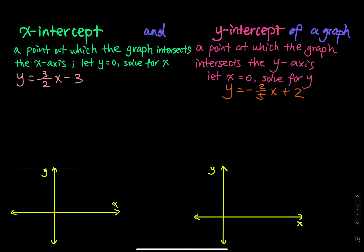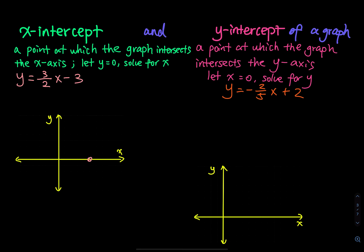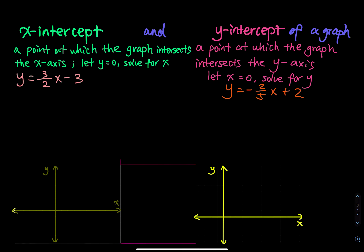Let's say we want to sketch the graph of the equation y equals (3/2)x minus 3. The x-intercept is the point on the curve where the curve hits the x-axis. Since that point is on the x-axis, we know y equals 0 there. So to find the x-intercept, we let y equal to 0.